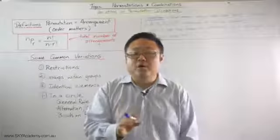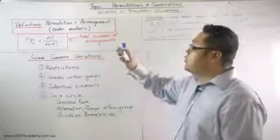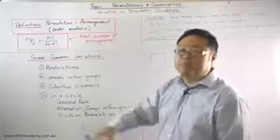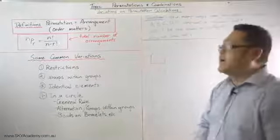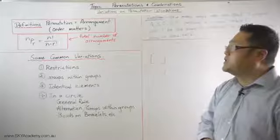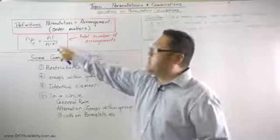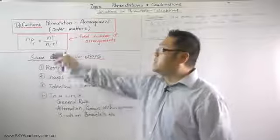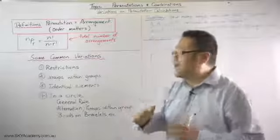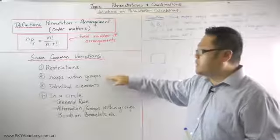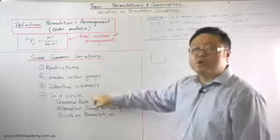Hi, this is Soong, your online maths mentor. We are going through permutations and combinations. We've been making our way through permutations, which is summarized on the board here. In particular, we're looking at some common variations to permutation-type problems or calculations which require us to depart slightly from our formula: NPR equals N factorial over N minus R factorial. So we looked at restrictions, we looked at groups within groups, we looked at identical elements.